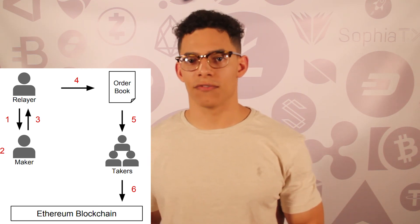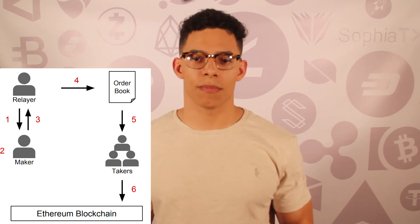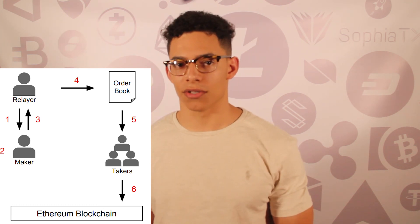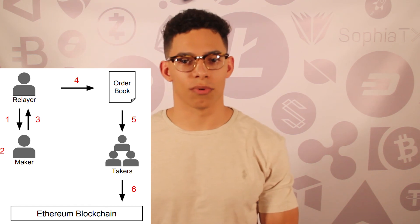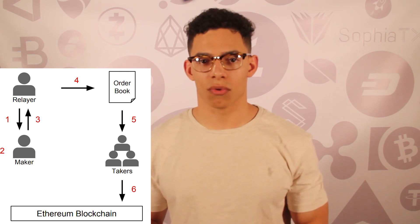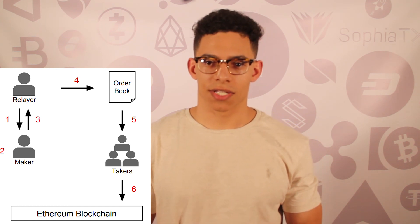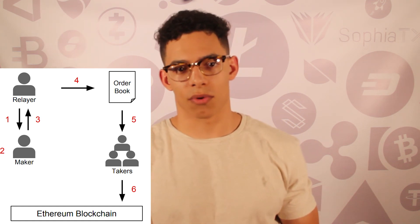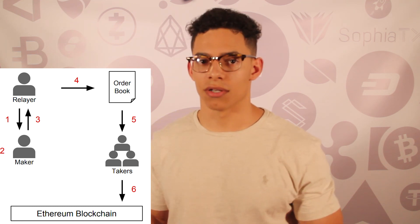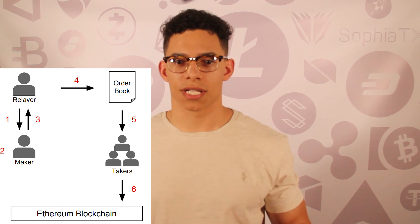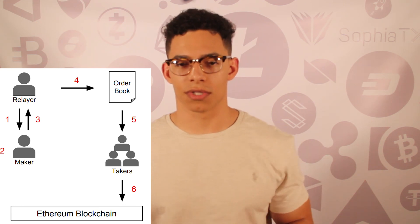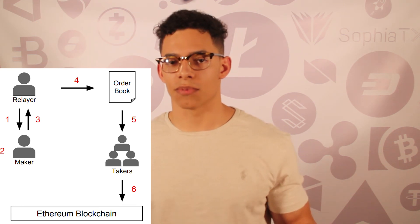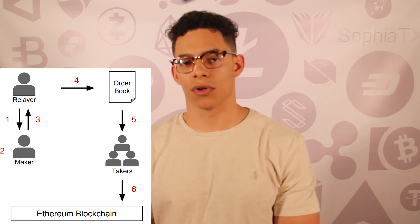In the broadcast order message format, the differences involve the relayer fields: fee recipient is the address of the relayer where fees are allocated after a completed transaction; Fee A is the fee provided by the maker; and Fee B is the fee provided by the taker. In step one, a relayer cites a fee schedule and collection address. In step two, the maker creates an order setting Fee A and Fee B to satisfy the relayer's schedule, sets the fee recipient, and signs with their private key. In step three, the maker transmits the signed order to the relayer.